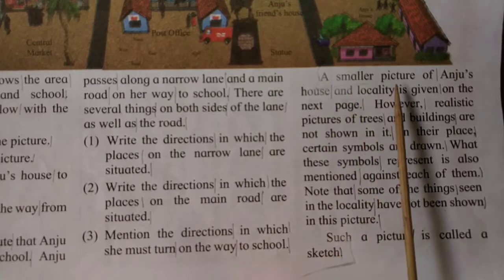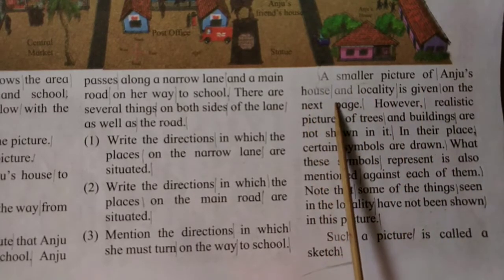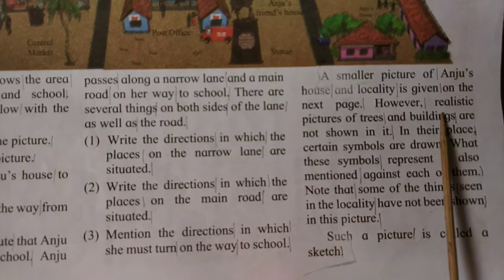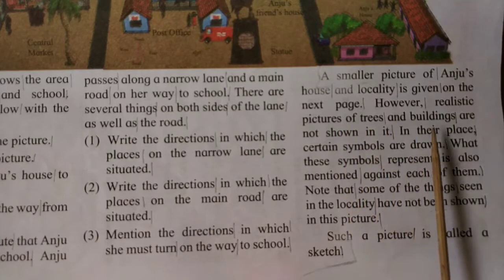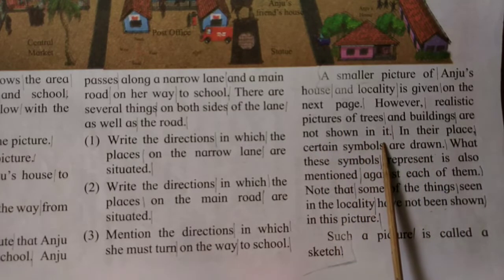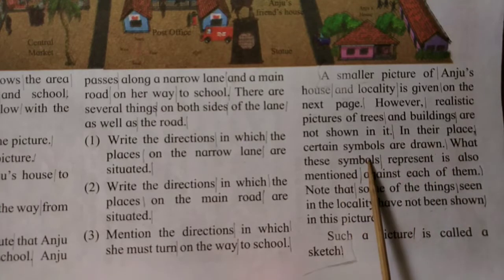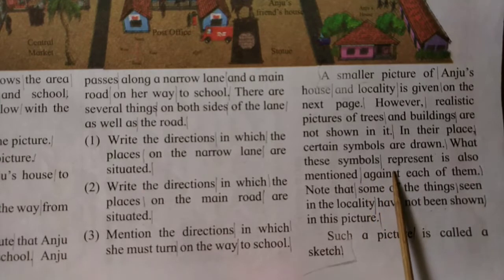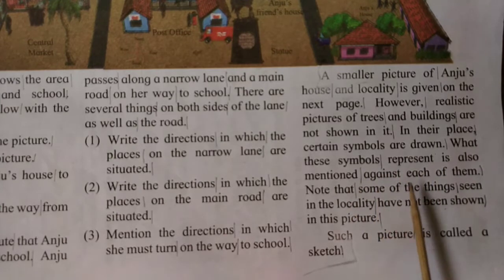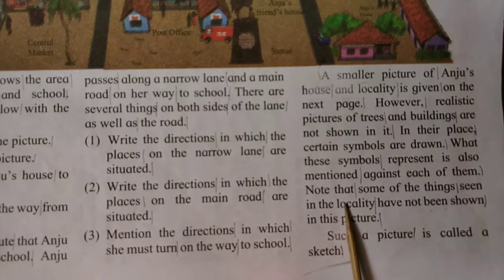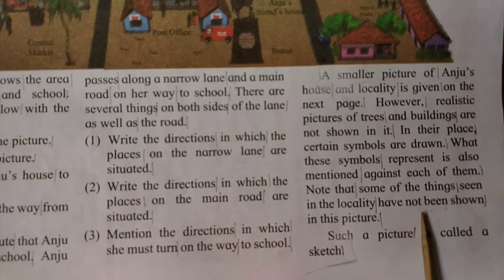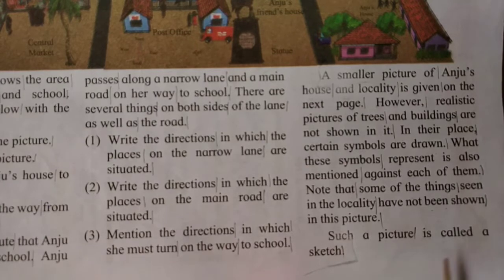A smaller picture of Anju's house and locality is given on the next page. However, realistic pictures of trees and buildings are not shown in it. In their place, certain symbols are drawn. What these symbols represent is also mentioned against each of them. Note that some of the things seen in the locality have not been shown in this picture. Such a picture is called a sketch.